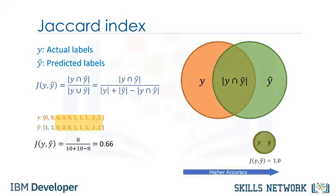If the entire set of predicted labels for a sample strictly matches with the true set of labels, then the subset accuracy is 1.0. Otherwise, it is 0.0.